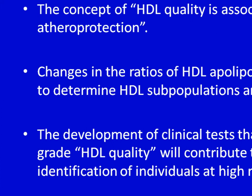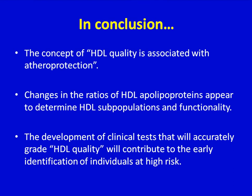The concept that quality is important for the atheroprotection offered by HDL is constantly gaining ground, and from our study we find that changes in the ratios of HDL apolipoprotein proteins appear to determine HDL subpopulation distribution and functionality. The possibility that such changes in HDL apolipoprotein ratios may serve as measurable markers for the early identification of asymptomatic individuals at higher risk of life-threatening acute MI should be further validated in large prospective epidemiological studies. However, we expect that the development of clinical tests that will accurately grade HDL quality will contribute to the early identification of high-risk individuals and may find important clinical applications in the management of coronary heart disease.